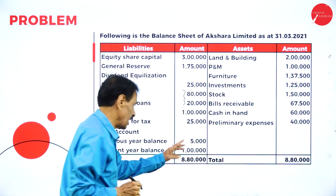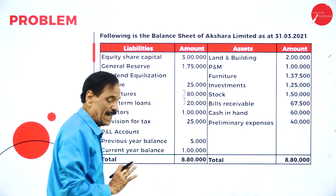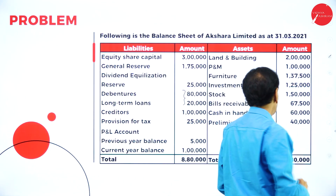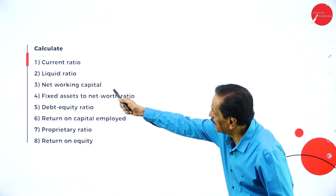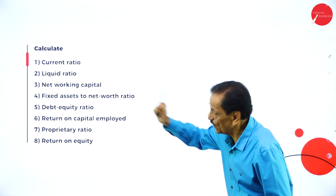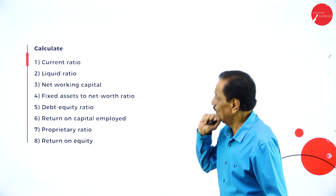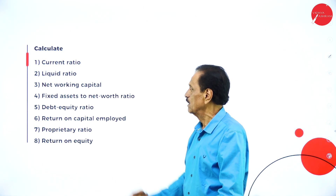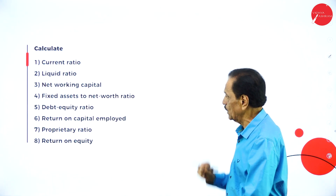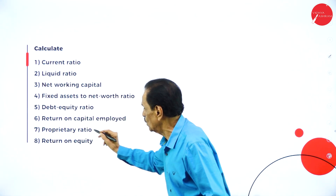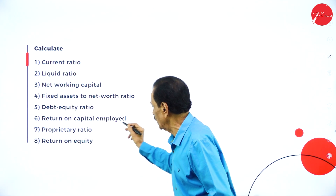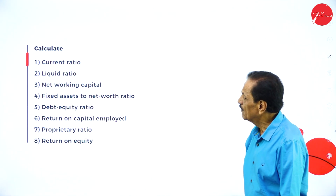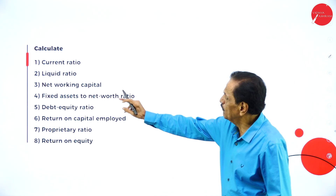Provision for taxation is a current liability. Profit and loss account of the last year and current year total 8,80,000. Now what are the things they ask us to calculate? Current ratio, liquid ratio, net working capital ratio, fixed asset to net worth ratio, debt equity ratio, return on capital employed, proprietary ratio, and return on equity. We will move on one by one.